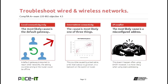For local connectivity only, the most likely cause is your default gateway. A default gateway is required to reach other networks. The setting for your default gateway could be wrong on the device you're trying to connect out of, or your default gateway settings may be incorrect on the router — you need to check both. There may also be the off chance that your router is offline.